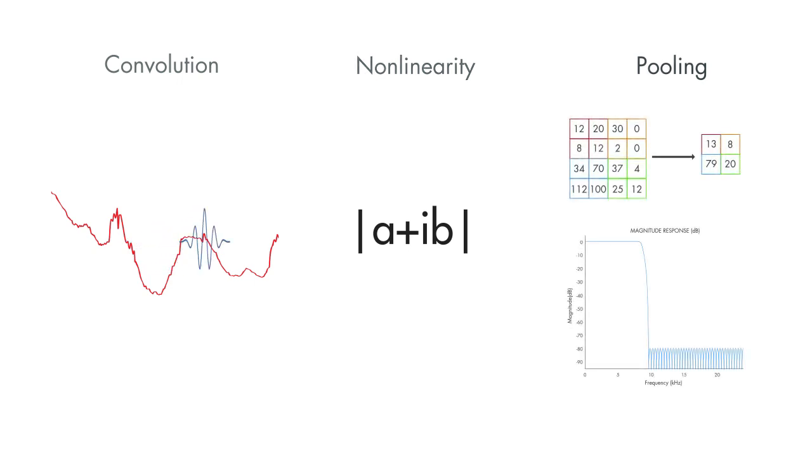A wavelet scattering network is referred to as a deep network because it performs three main tasks that make a deep network: convolution, nonlinearity, and pooling. In this case, convolution is performed by wavelets, the modulus operator serves as the nonlinearity, and filtering with wavelet low-pass filters is analogous to pooling.